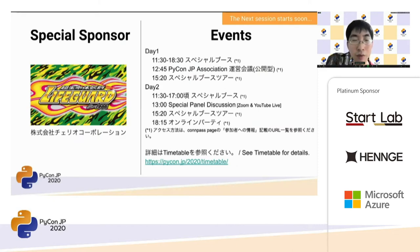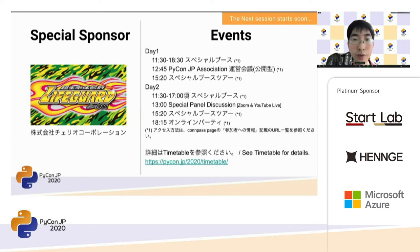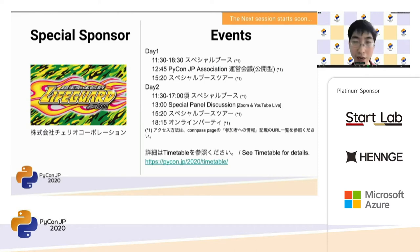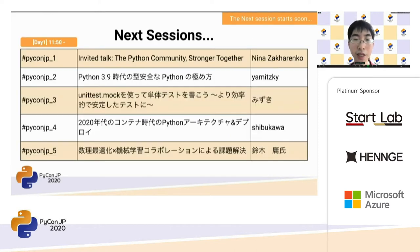Now we are going to start Ms. Nina's presentation. The title is 'The Python Community Stronger Together.' The presentation time is 30 minutes, including questions and answers.